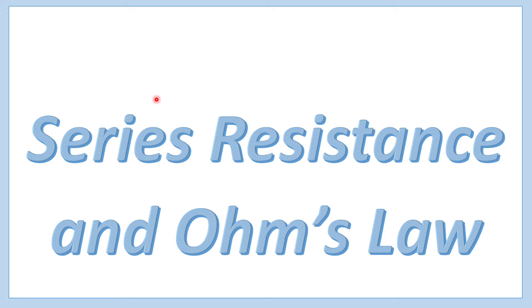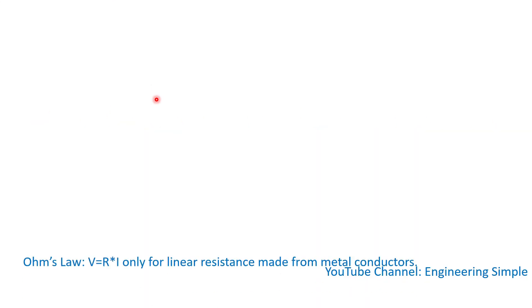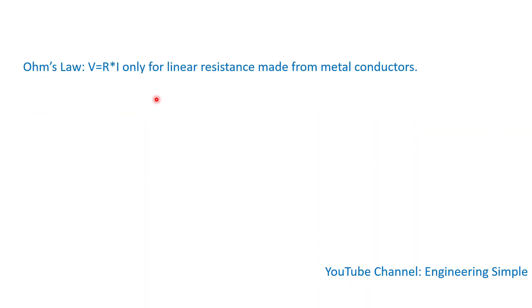In this video we will look at resistances in series and also Ohm's law. Ohm's law is voltage equals resistance times current, and this only applies for a linear resistance made from metal conductors.